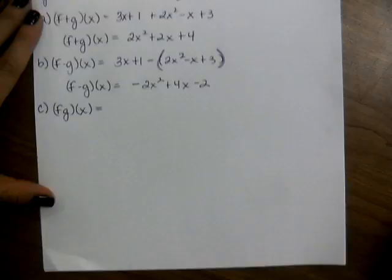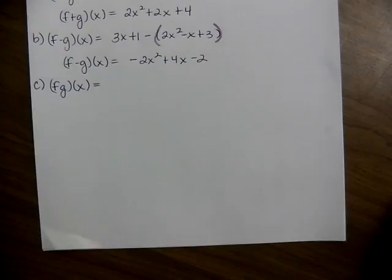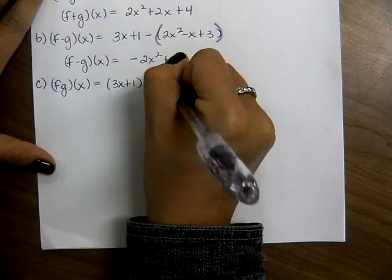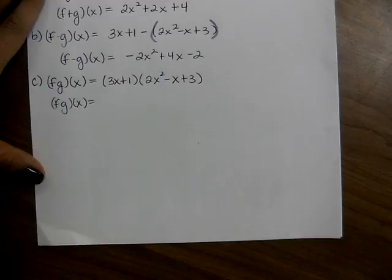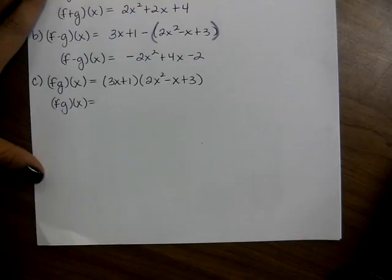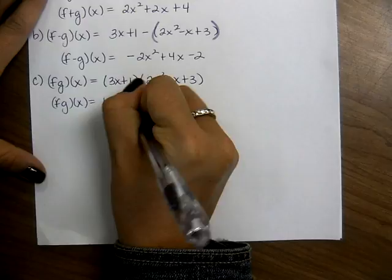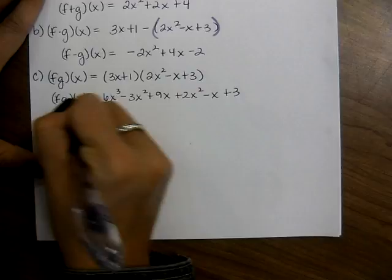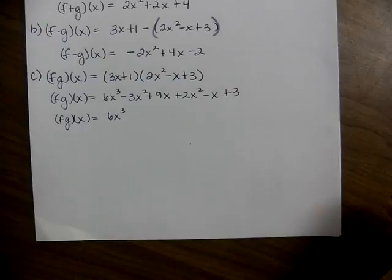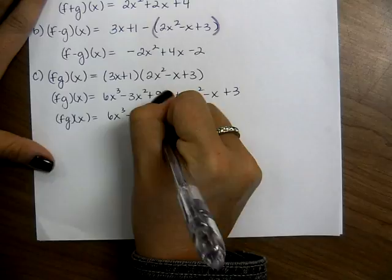What do you think you do if it says f times g of x? You multiply. So (3x + 1)(2x² - x + 3). You have to distribute 3x to all three terms, then distribute the 1 to all three terms. We end up getting 6x³ - 3x² + 9x + 2x² - x + 3. Then we combine like terms and make sure we have this in standard form — descending order, highest degree to lowest.